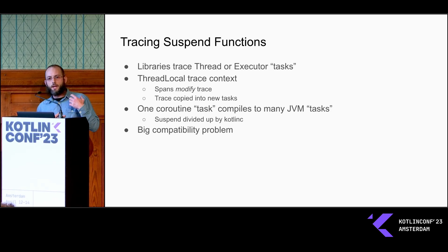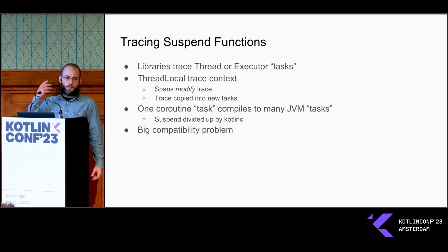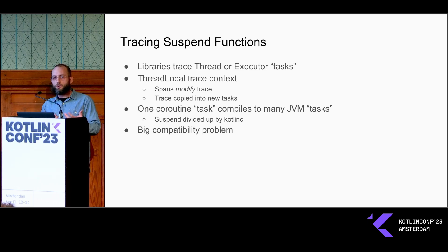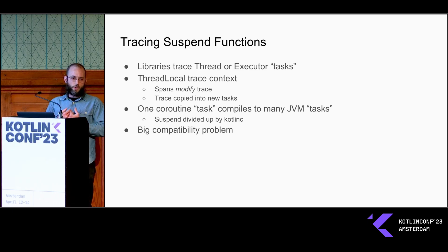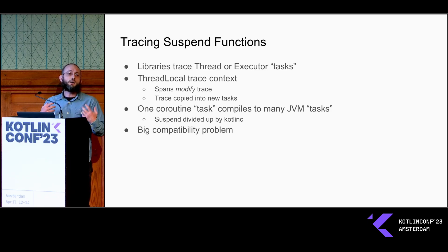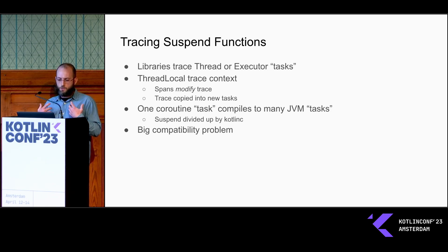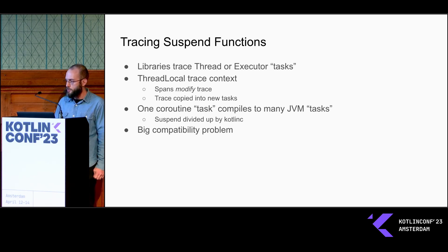For Java tracing libraries, that means they are designed to work with thread or executor tasks. When concurrency gets involved in the program, managing this trace context object can be significantly more difficult than in a linear program. The way the trace library handles this is by copying the trace context object into each new concurrent task as that task starts. That way, the origin task and the started task do not concurrently modify the trace and emit garbage output. This is how we stitch things together later, and that's how we get traces that work in concurrent programs.